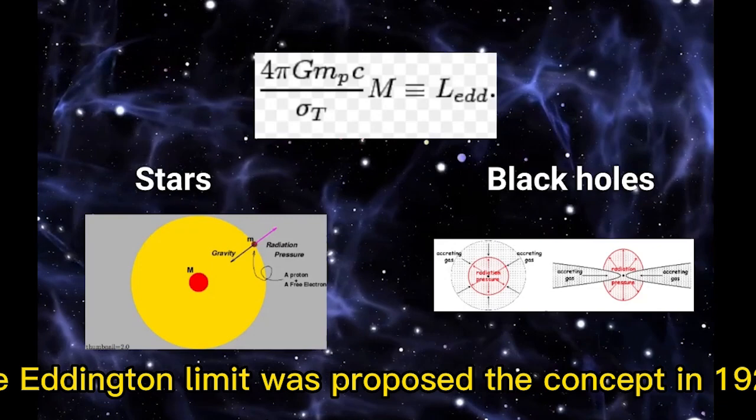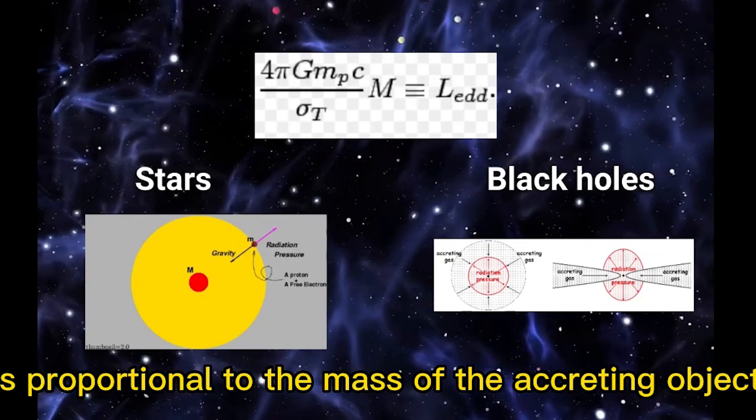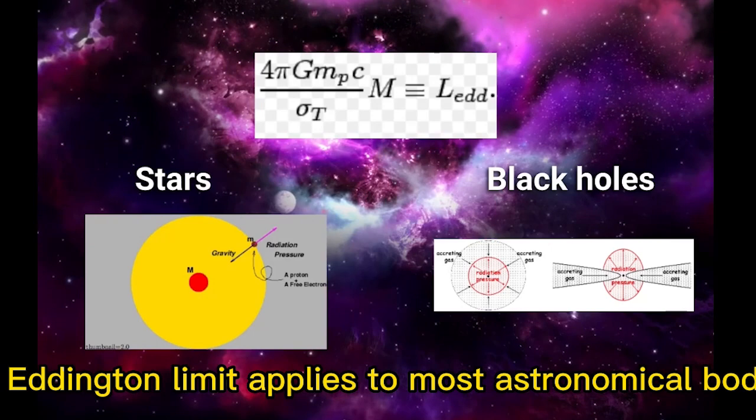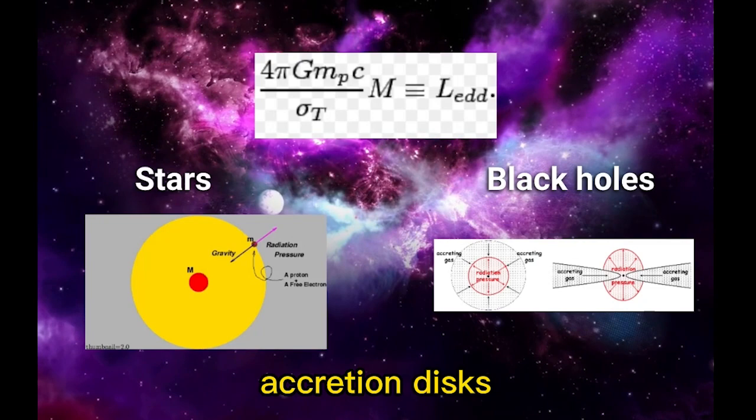The Eddington limit was proposed in 1926. The Eddington limit is proportional to the mass of the accreting object, meaning that more massive objects have higher limits. The Eddington limit applies to most astronomical bodies such as stars, black holes, accretion discs, and galaxies.